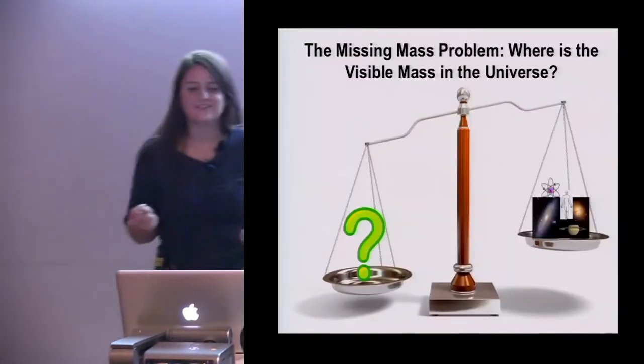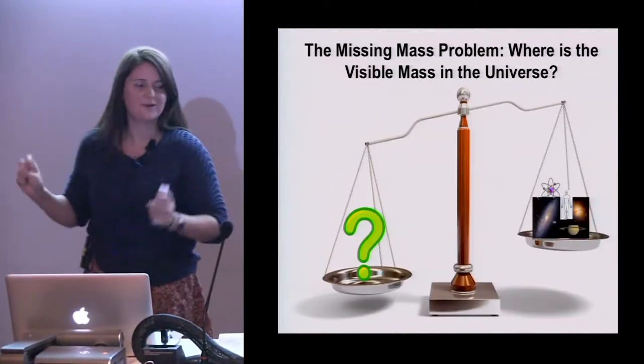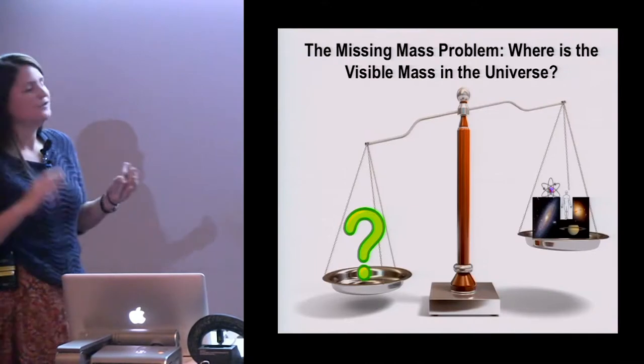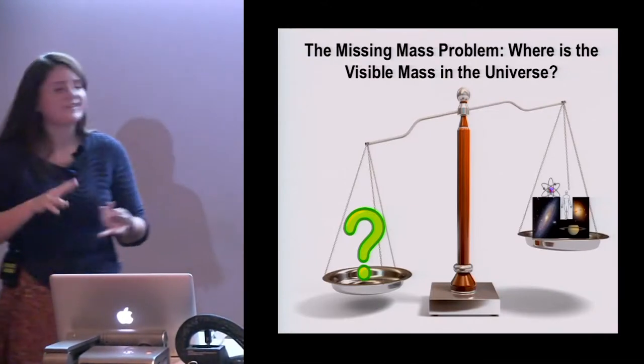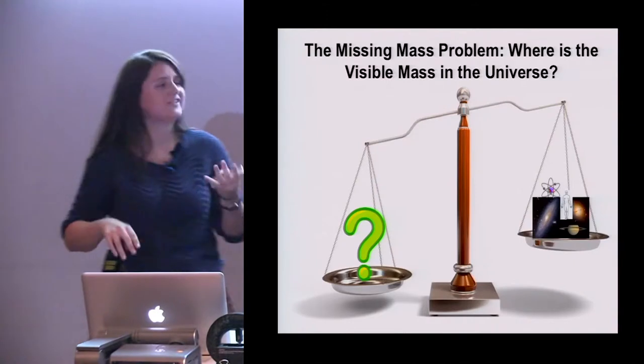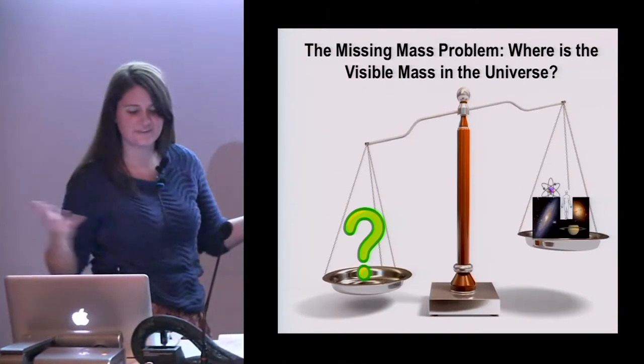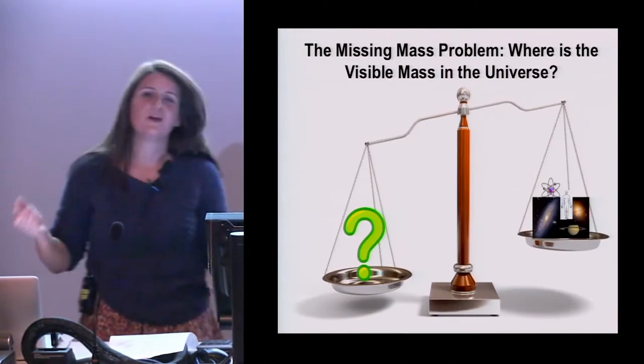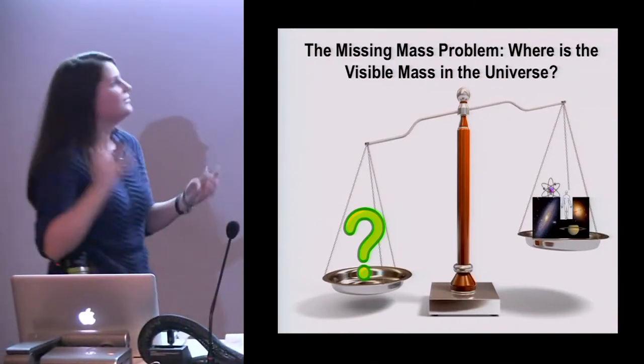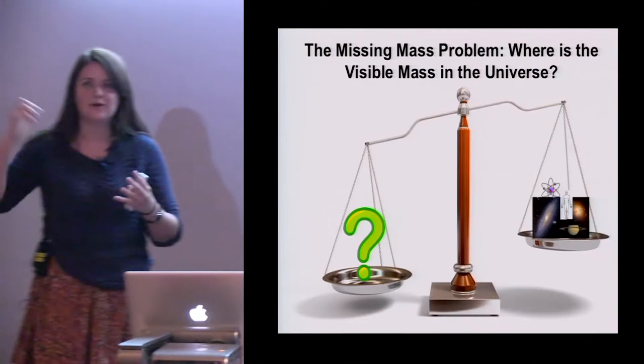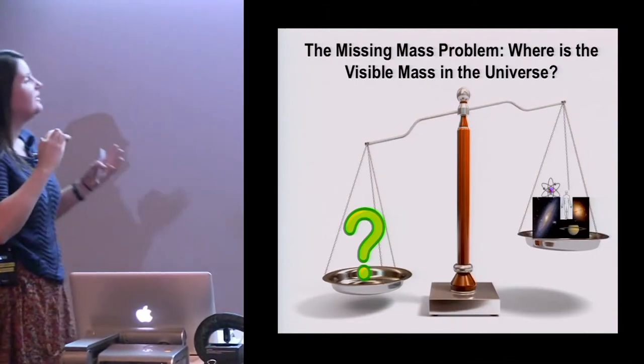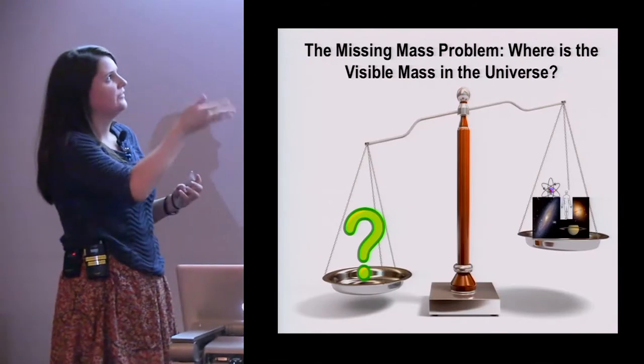So I want to introduce you now to the missing visible mass problem. So if we were to take all of the visible mass of the universe, all of the stars, galaxies, planets, dust, gas, atoms, all the humans, this desk, if we were to add everything up and weigh it, what we would find is that if we compare it to simulations and observations of the way the universe looks to us today, we'd find that we're actually missing a large fraction of this visible mass.